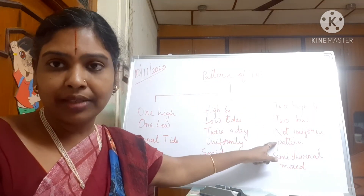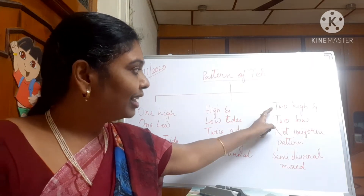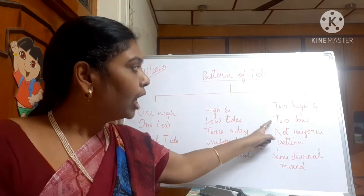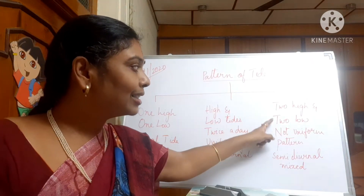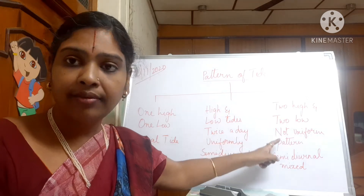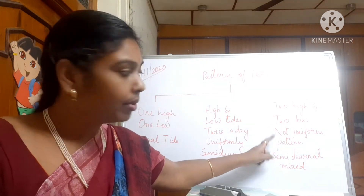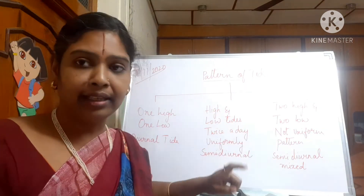This kind of semi-diurnal mixed tide is found in most parts of the world, including the Pacific Ocean — most parts of the world will be having two high tides and two low tides which are not in a uniform pattern.